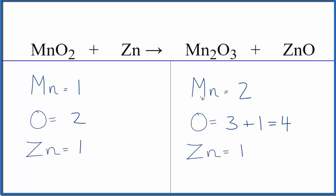It looks like we could start by balancing the manganese. We have one here and two here. So if we put a two in front of the manganese 4 oxide, one times two, that would balance the manganese.